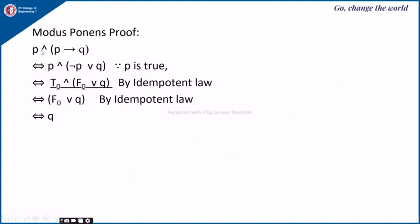This is the proof for modus ponens. The premises are P and P implies Q; we know P implies Q is equivalent to negation of P or Q. Since P is true, negation of P is false. So we have false or Q. By the identity law, false or Q is equivalent to Q. Therefore modus ponens is proven: from P and P implies Q, we can conclude Q.